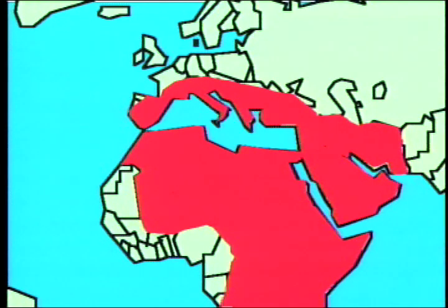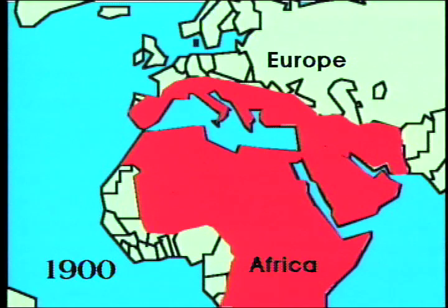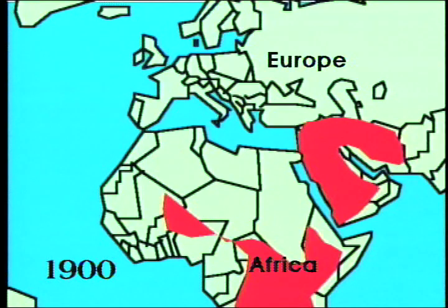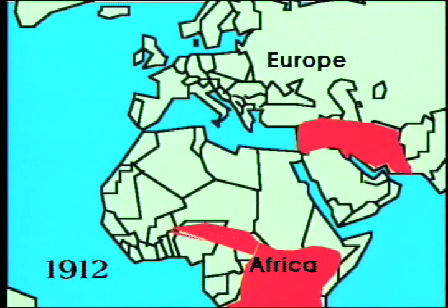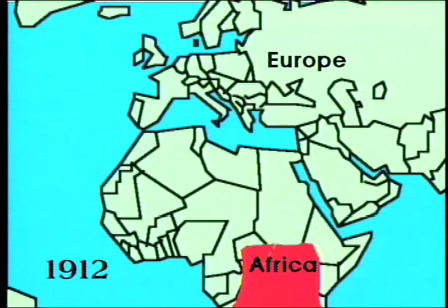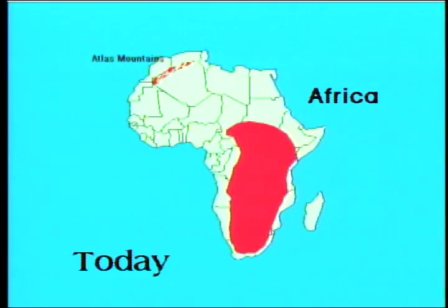Wild populations also existed in the Middle East and in the Mediterranean parts of Europe in more recent times. By 1900, they had disappeared from Europe, Egypt, Libya, Algeria, and Morocco. By 1912, the last ones were seen in Saudi Arabia, Jordan, Syria, Iraq, and western Iran. They are now found in reduced numbers on savanna areas of the African continent, south of the Atlas Mountains.